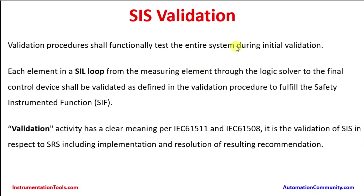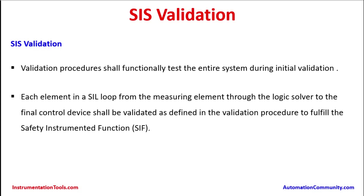Validation procedures functionally test the entire system during initial validation. Each element in a SIL loop — from the measuring element through the logic solver to the final control device — shall be validated as defined in the validation procedure to fulfill the safety instrumented function. Validation activity has a clear meaning per IEC 61511 and IEC 61508: it is a validation of the SIS with respect to the SRS (Safety Requirement Specification), including implementation and resolution of resulting recommendations.